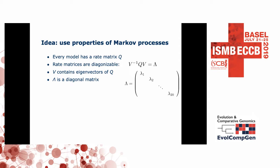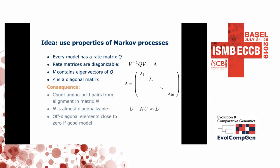Using a model like this, if you generate data, these properties propagate down to the actual sequence alignment. So if we have data generated from a process closely following this model, we can construct a matrix N by computing the number of amino acid pairs of various sorts — A versus A, A versus S, and so on — all through the multiple sequence alignment. This N matrix is a count matrix. And then there exists a matrix U that can, depending on how much data you have in N, diagonalize N. This U matrix is easy to compute directly from the eigenvectors of Q.